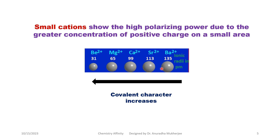On the other hand, a larger cation has a bigger ionic size, which gives it less polarizing power. So an ionic compound with a larger cation has more ionic character and less covalent character.